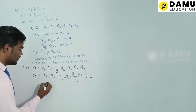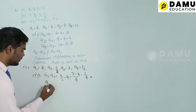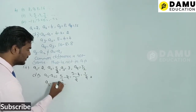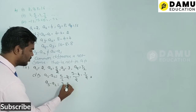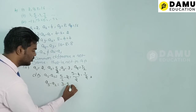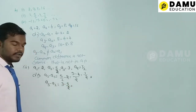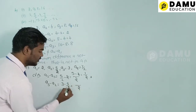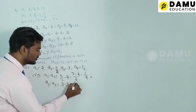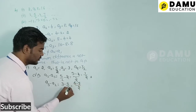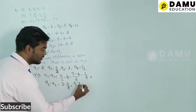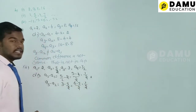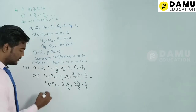Next, a3 − a2 = 3 − 5/2. Taking LCM of 2: (6 − 5)/2 = 1/2. The common difference here is also 1/2.